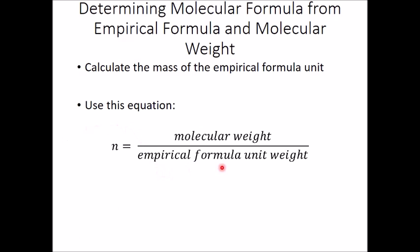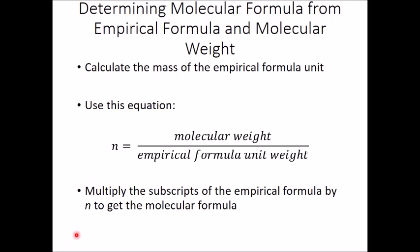After you've got your empirical formula unit weight, you're just going to plug all of it into this equation. You're going to divide the molecular weight by that empirical formula unit weight, which gives you n. n is the number you will multiply all of the subscripts of the empirical formula by to get the molecular formula.